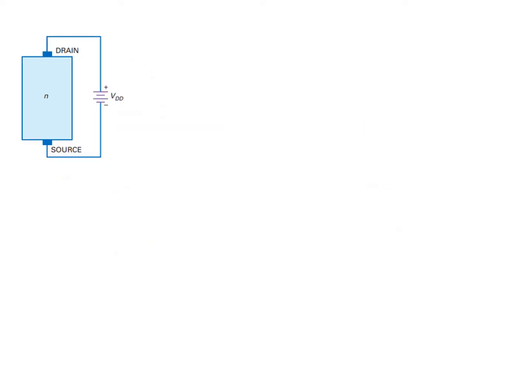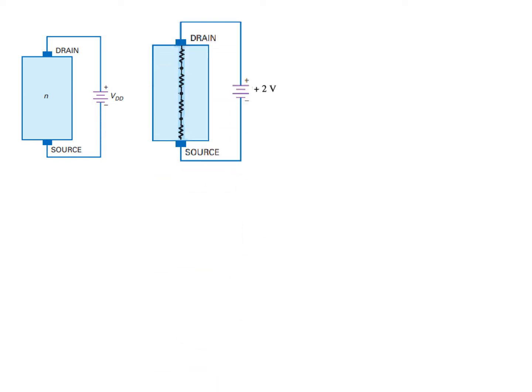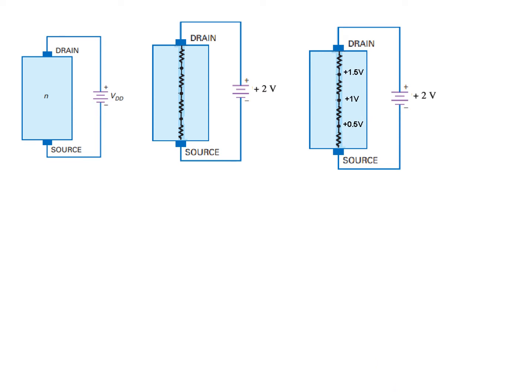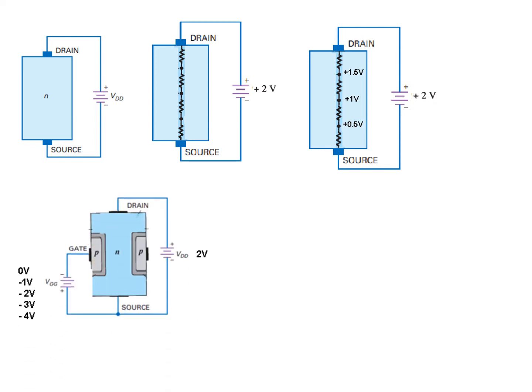We started with this circuit — it's an N-channel, so obviously the channel would have some kind of resistance in it. These are the resistances; the total resistance is divided into four parts. The voltages at these points are found by the voltage division rule. If these parts are of equal resistance, then at this point it will be 0.5V, here it will be 1V, here it will be 1.5V, and here it will be 2V.